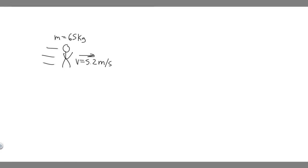In this problem, we're told a 65-kilogram runner has a speed of 5.2 meters per second at one instant during a long-distance event. Part A: what is the runner's kinetic energy at this instant? And Part B: how much net work is required to double his speed?